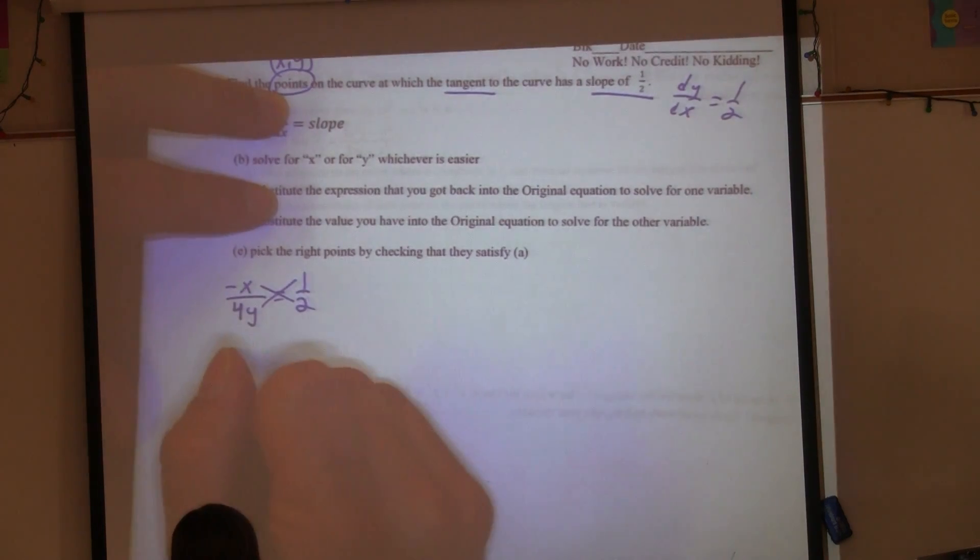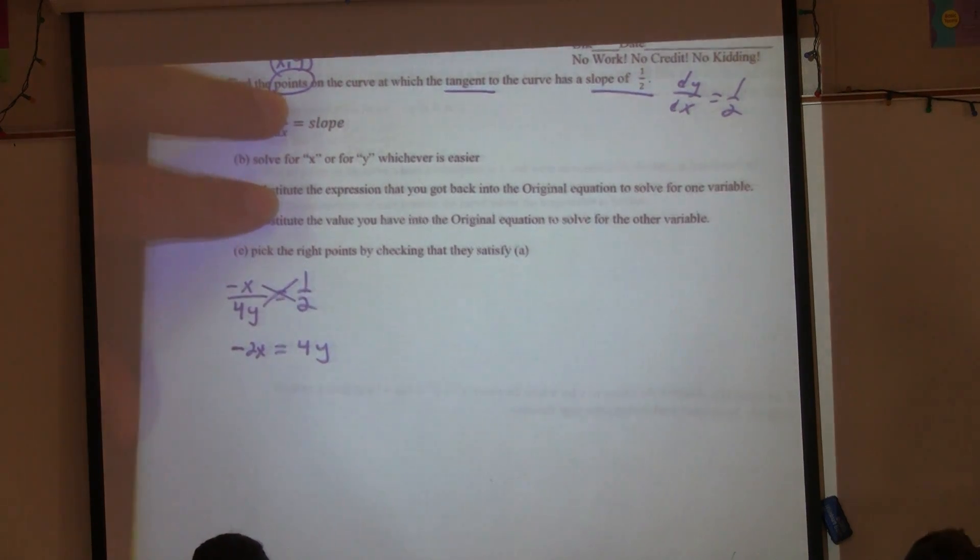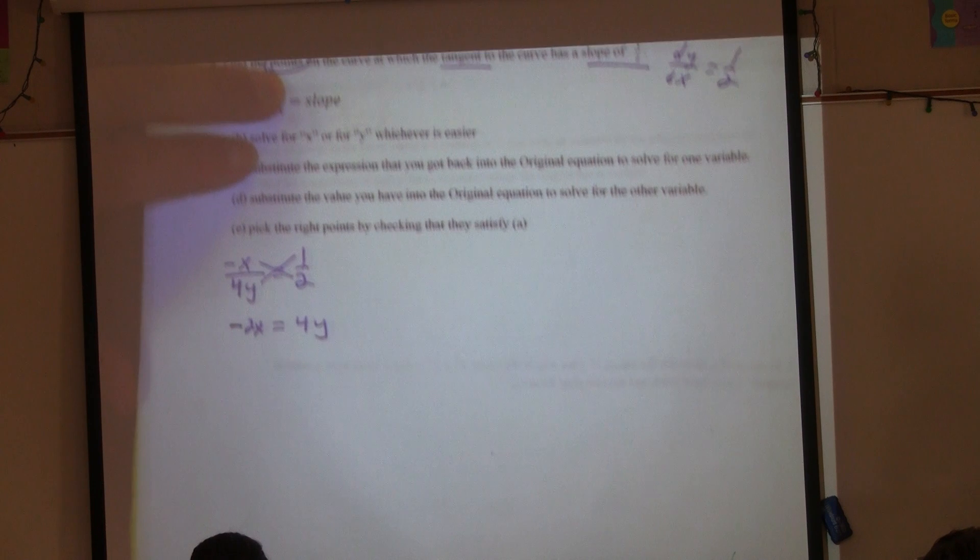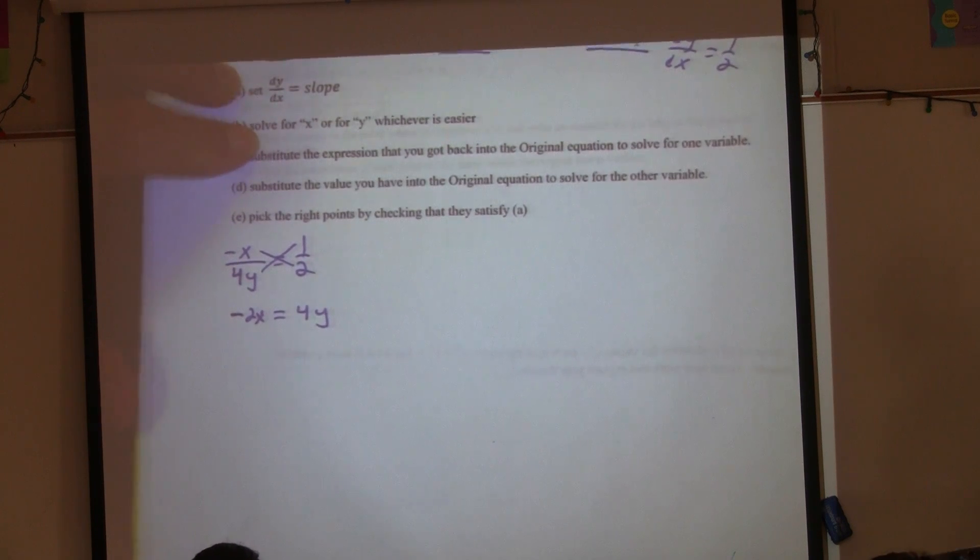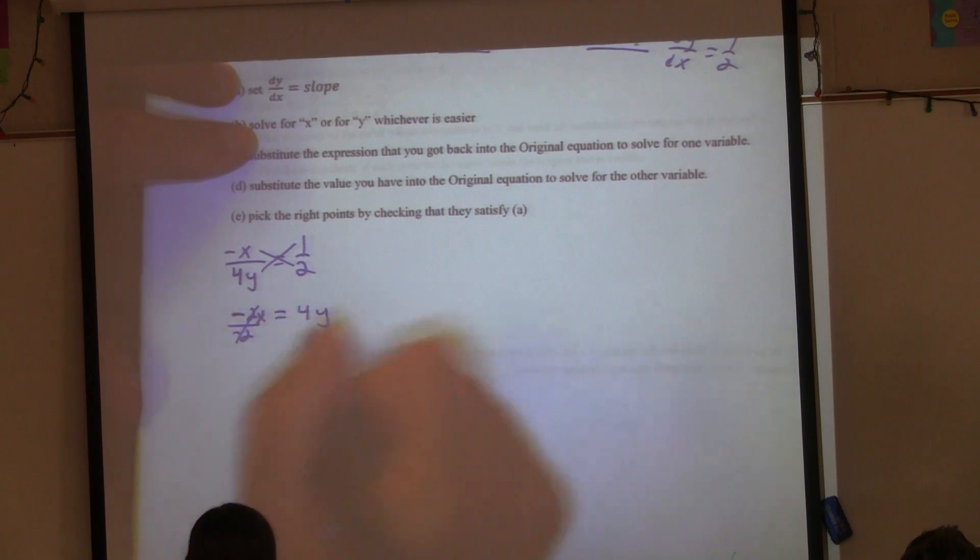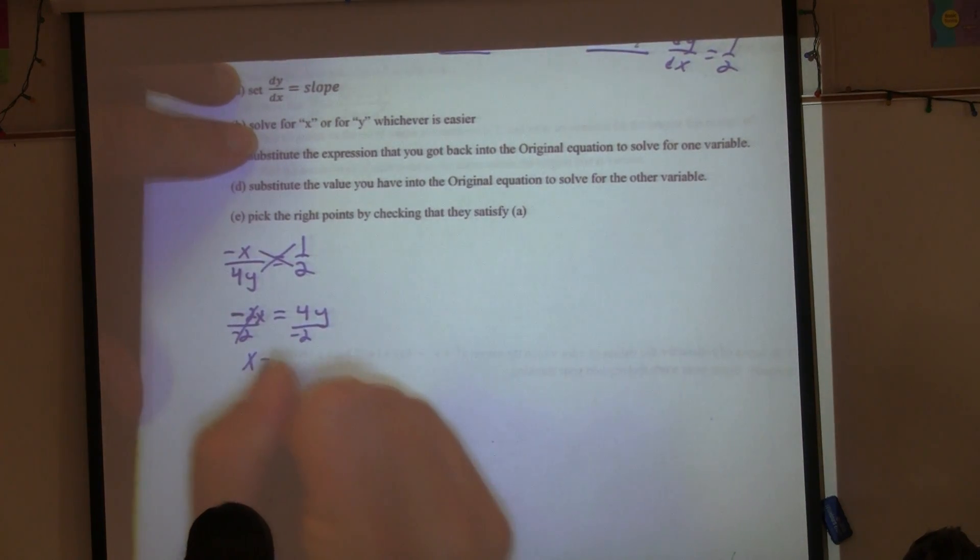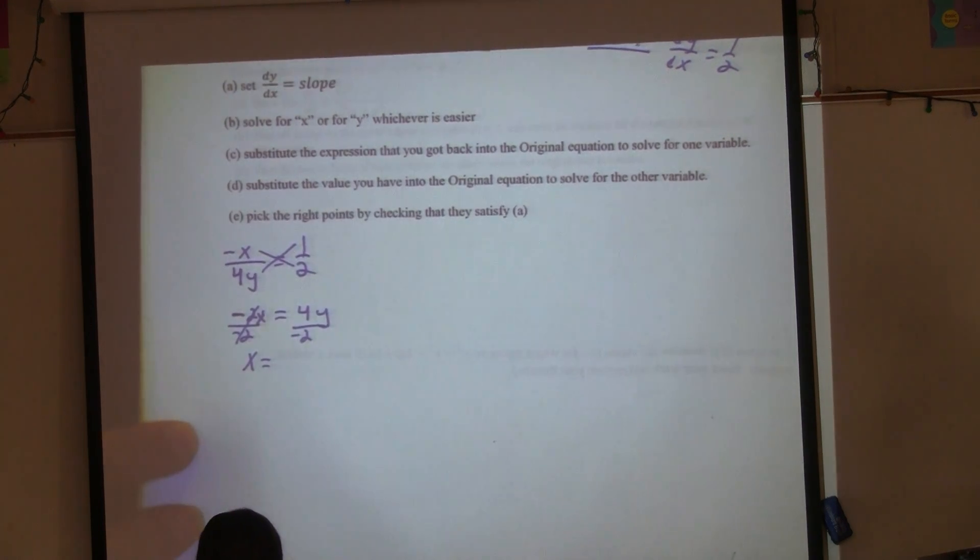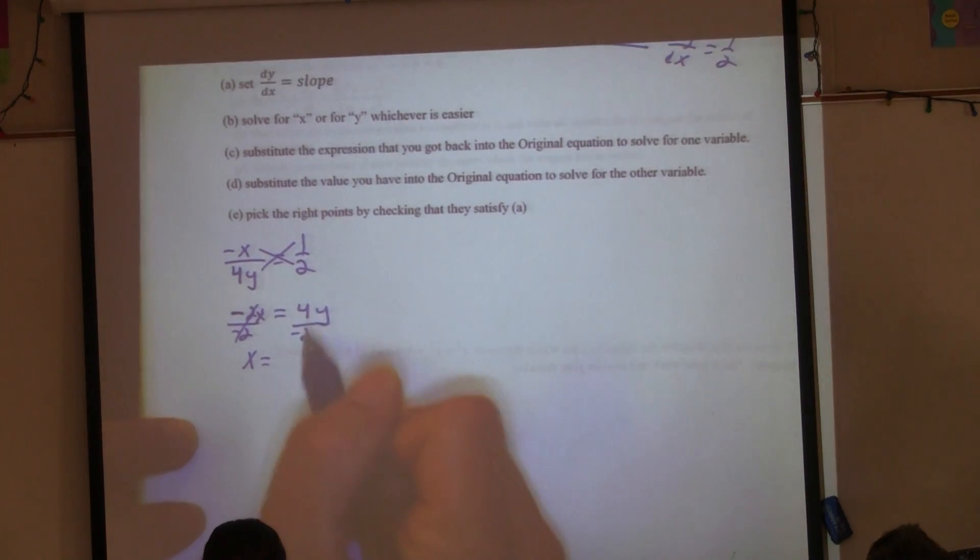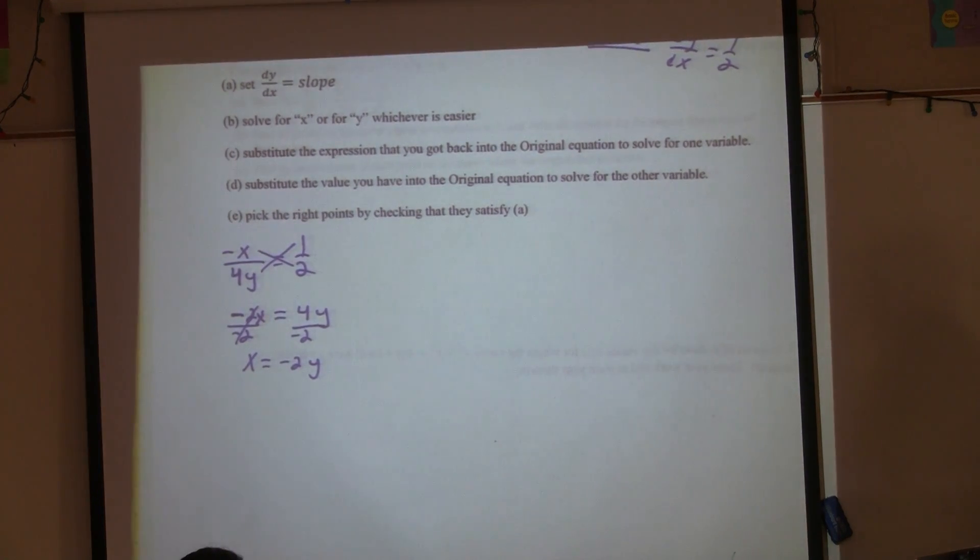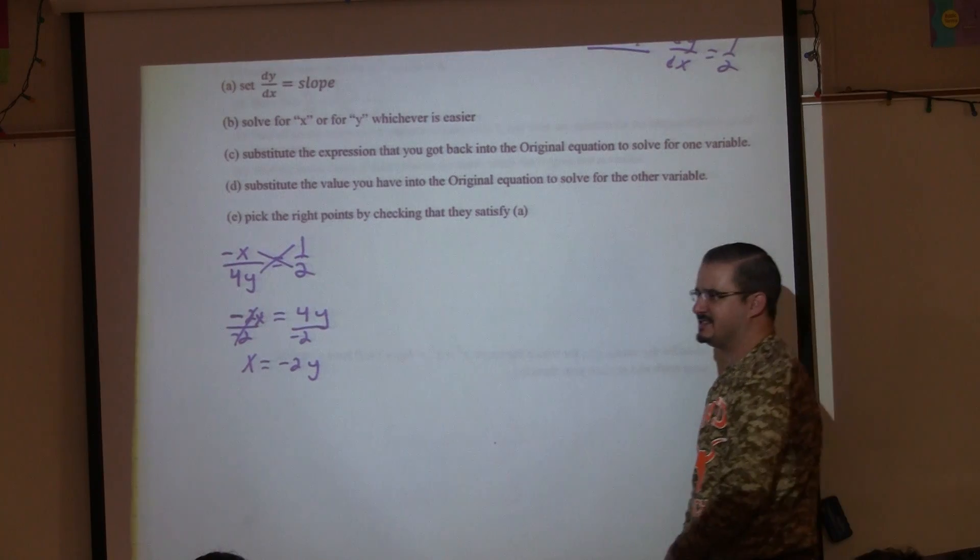We have to cross multiply. That would give me negative 2X equals 4Y. Would it be easier to make it X equals or Y equals? X equals. One will give me a fraction and one won't. Four divided by two is negative 2, so X is negative 2Y.